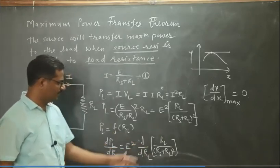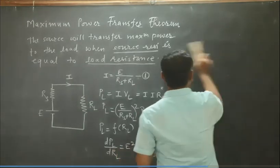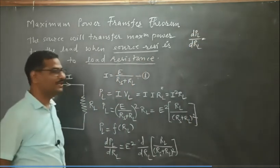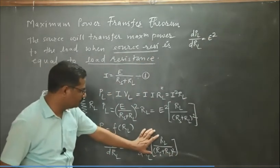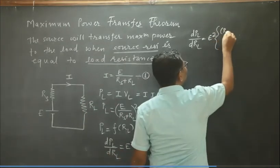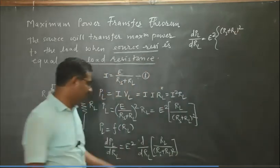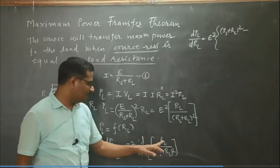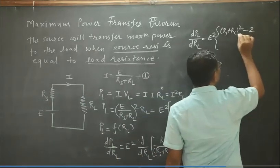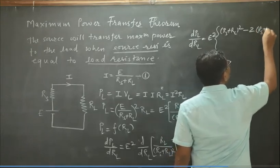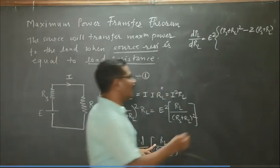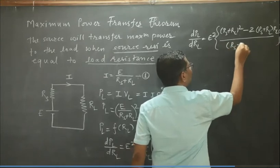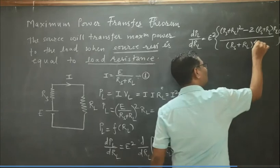We use the quotient rule to obtain the derivative. So dPL/dRL equals E squared times: the denominator RS plus RL whole squared as is, into the derivative of the numerator RL with respect to RL, which is 1, minus the derivative of the denominator RS plus RL whole squared, which is 2 times RS plus RL, into the numerator RL as is — all divided by the square of the denominator, that is RS plus RL to the power 4.